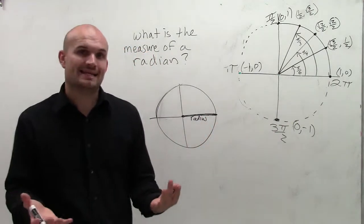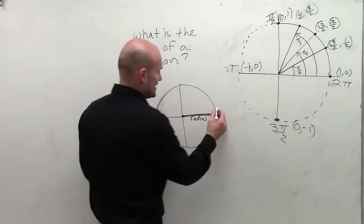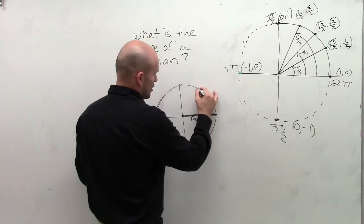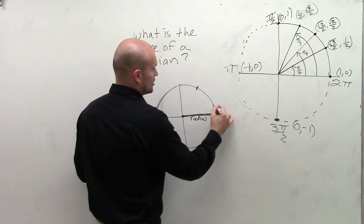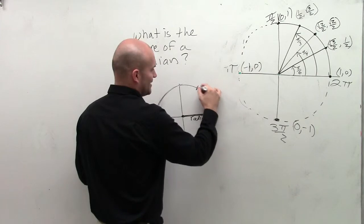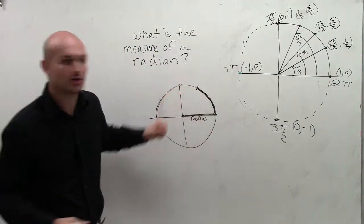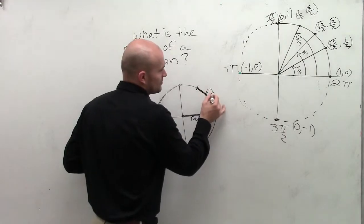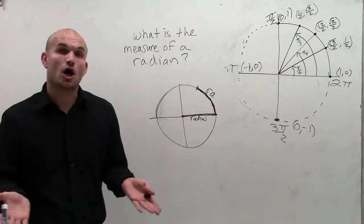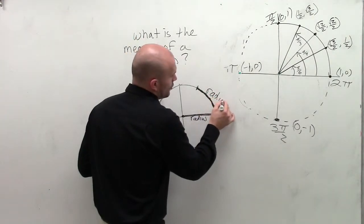Now, what a radian is, is if we were to take this radius and wrap it around the circle. So instead of it being a straight line, if I kind of made it now a little arc, you could see I could wrap it around my circle. And how far it wraps around my circle, or what we call our arc length, we can call our radian.